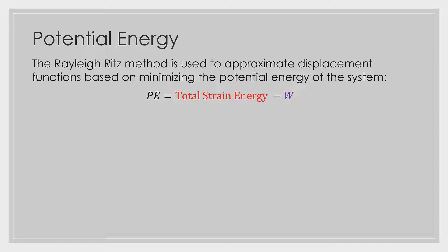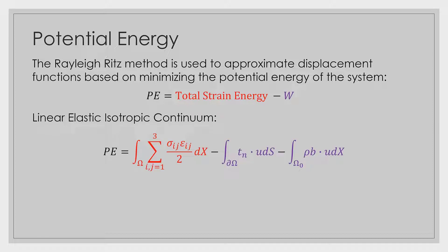In this course we basically have three situations. The first situation is a linear elastic isotropic continuum — essentially just a plate. Our potential energy is simply the total strain energy, which we get by integrating the strain energy density function U-bar, simplified into its summation. And we subtract the work done by either the traction vectors T_N or the body forces ρB on the system.